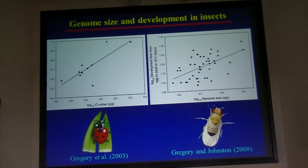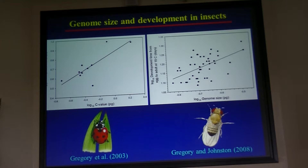We also looked at developmental parameters in different groups of invertebrates. For example, here is development time from egg to adult in days versus genome size in lady beetles. And here's an analysis in different species of drosophilid flies, with temperature-controlled development data taken from stock centers — how long it takes each species to mature versus genome size. We did phylogenetic correction in that study and there's still a relationship: the bigger the genome, the longer it takes to develop. But developmental rate is one issue; more interesting, potentially, is developmental complexity.